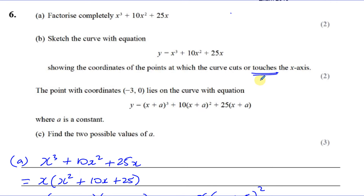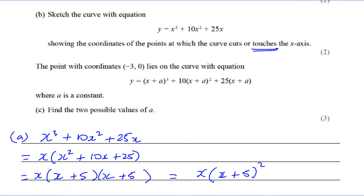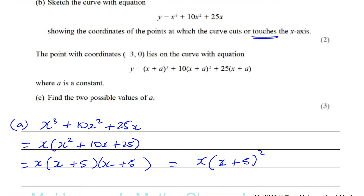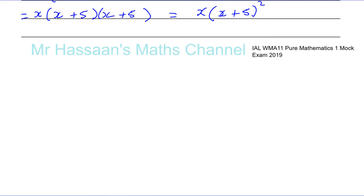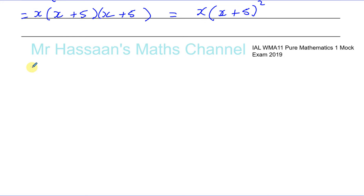Basically here we're going to have to plot the graph of this function. This function becomes y equals x times (x + 5) squared. This is part B, so we're going to do a sketch. I'll draw a pair of axes.